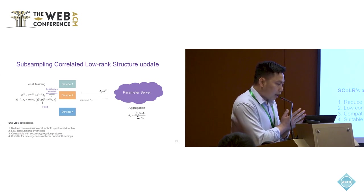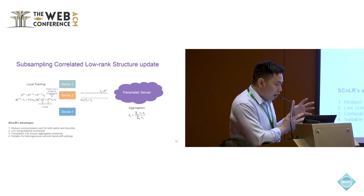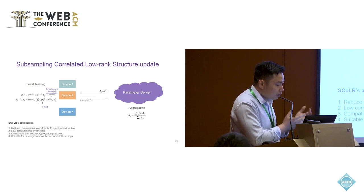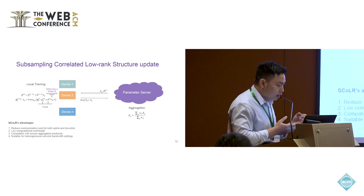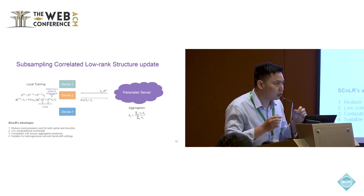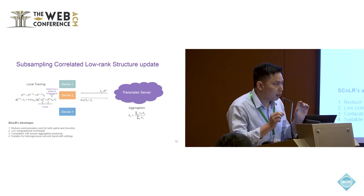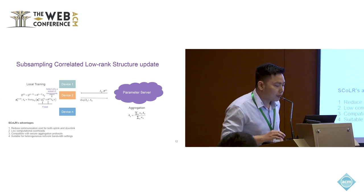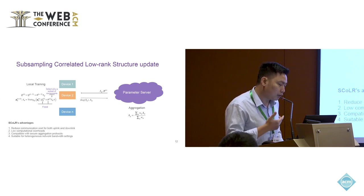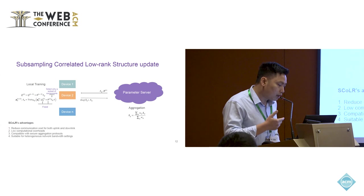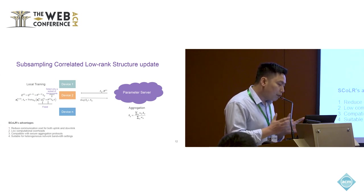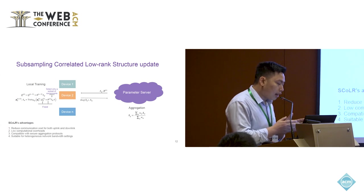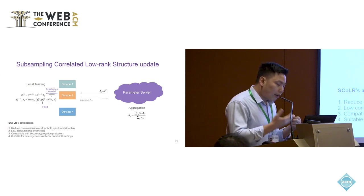Another aspect we look at is the heterogeneity in the computational budget of the clients. Certain clients can only afford computation up to a certain level of low rank — it's not always the case that you have a homogeneous rank for all the clients. This mechanism allows you to select a subset of components within the computational budget of the client and still allow the entire system to benefit from this collaborative low-rank structure update training.